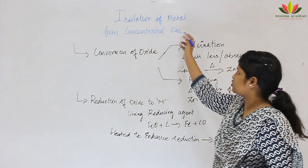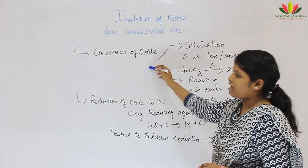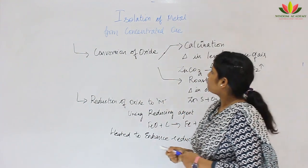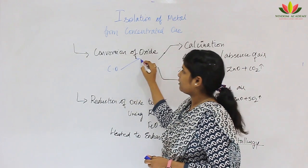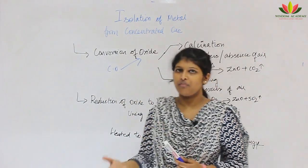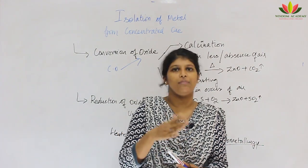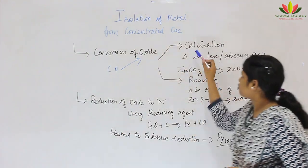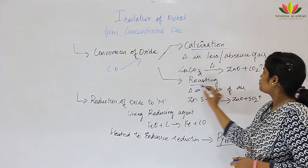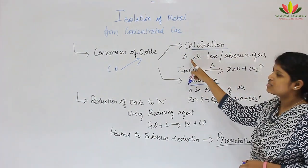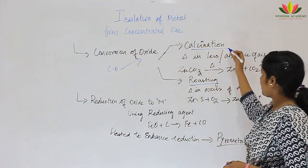After that, we have the second step — isolation of metal from the concentrated ore. Here we have two steps. First, we have to convert the concentrated ore to an oxide. Whatever form it may be — carbonate, sulphide — it should be converted to metallic oxide. We have two methods: the first one is calcination and the second one is roasting. Calcination is heating in less or absence of air.